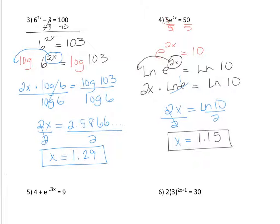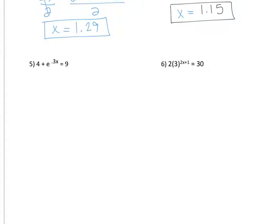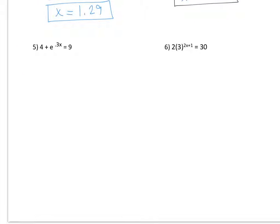I'd actually like you to try number 5 on your own. I'm going to skip to number 6 for now, because number 6 is a little bit tricky. The first thing that you want to do with number 6 is isolate the base. We're going to divide the 2 like we did before. And, we have 3 to the 2x plus 1 equals 15.